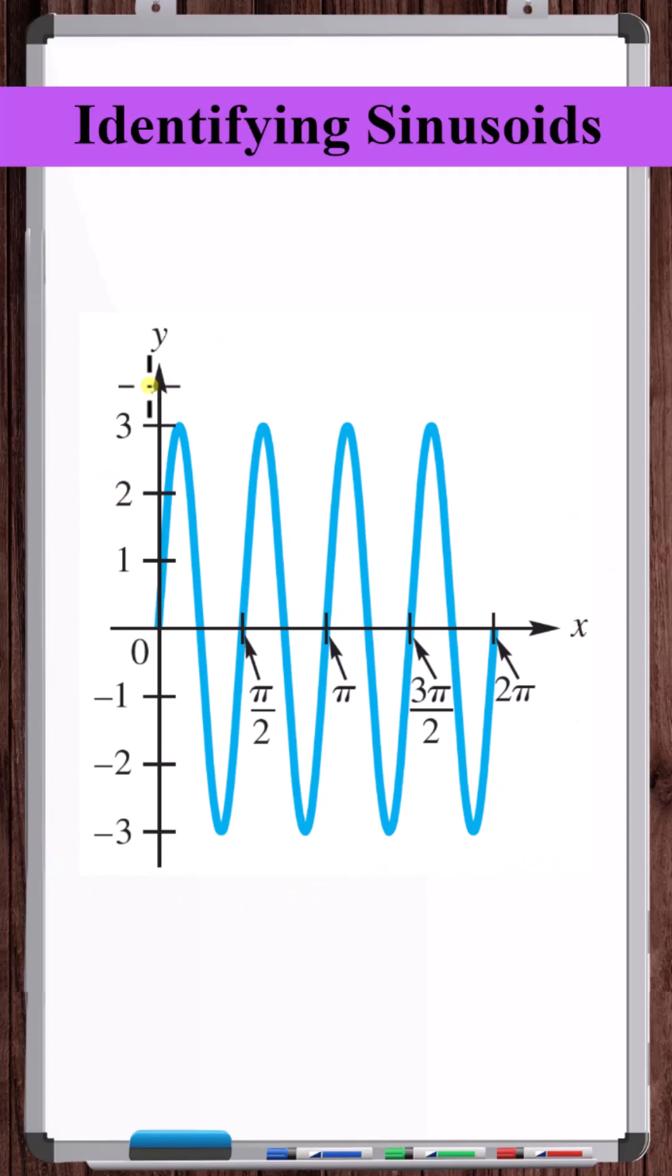Let's write the equation of this sinusoid. We can see that at x is equal to 0, the function equals 0, and from there it starts positive. So we can write this as a sine function.